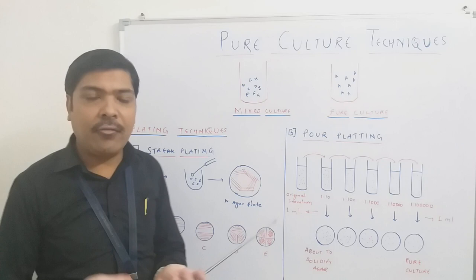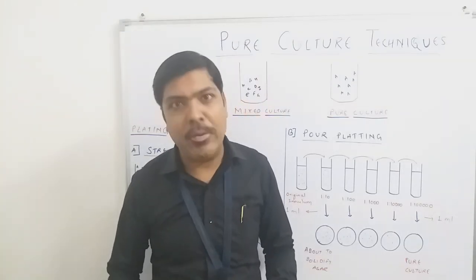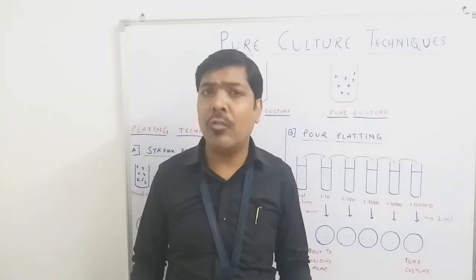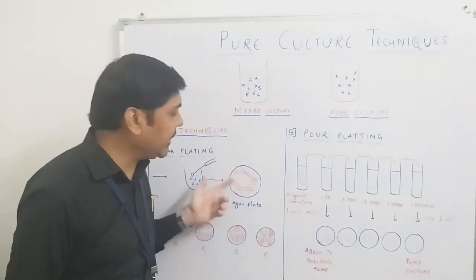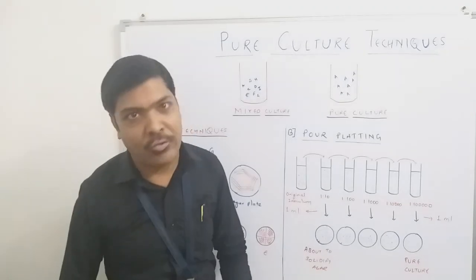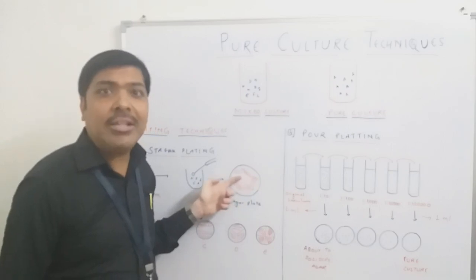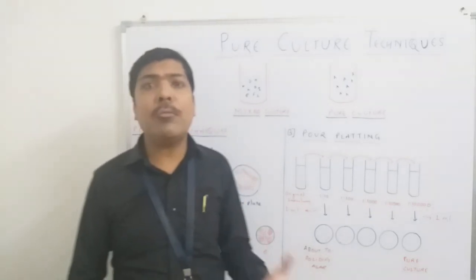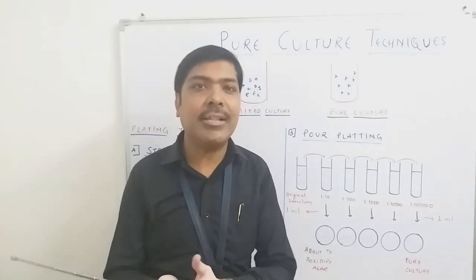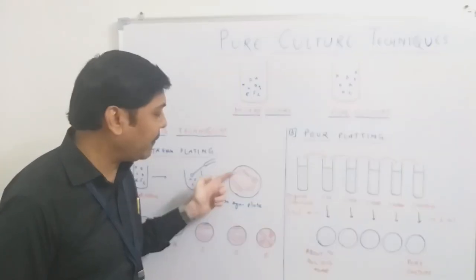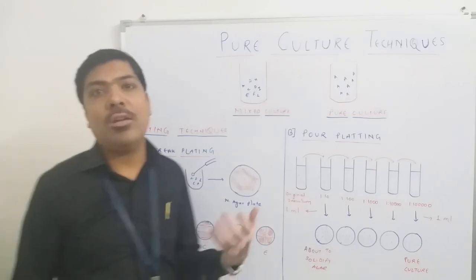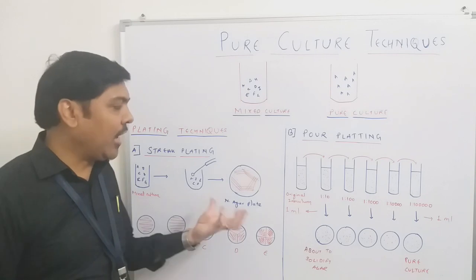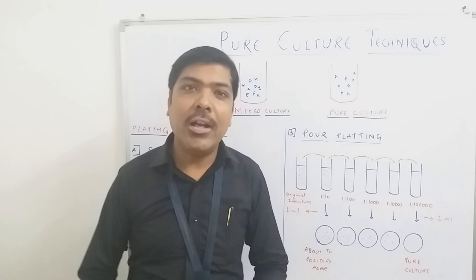We close the petri dish and keep it for incubation at 37 degrees centigrade for at least 24 hours. After 24 hours, the microorganisms streaked on the petri dish develop colonies. At the start of striking, colonies will be crowded and overlapping because the number of bacteria are very high. But as the striking continues, the number of bacteria reduces, and at the end of the striking process very pure isolated colonies are observed. We then observe these pure colonies inside the laminar air flow.